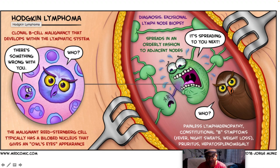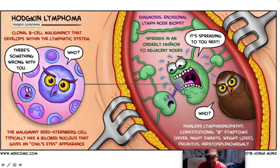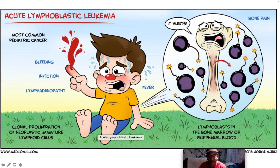Hodgkin's lymphoma is by and large a clonal B-cell malignancy that develops within the lymphatic system. The malignant Reed-Sternberg cell — the infamous Reed-Sternberg cell — typically has a bilobed nucleus giving an owl's eyes appearance. Diagnosis is by excision biopsy. It spreads in an orderly fashion to adjacent nodes and classically presents with painless lymphadenopathy and constitutional B symptoms: fever, night sweats, weight loss, pruritus, and hepatosplenomegaly.